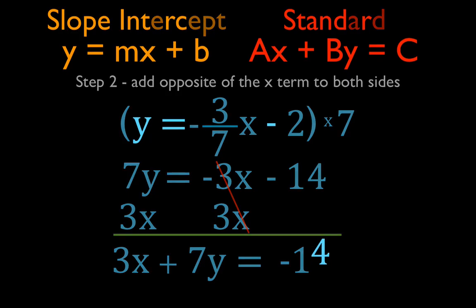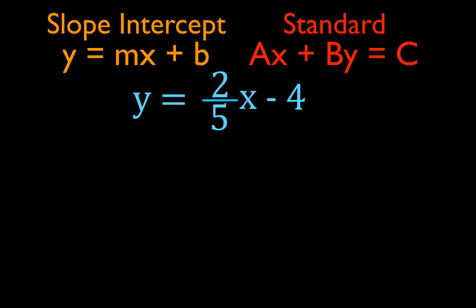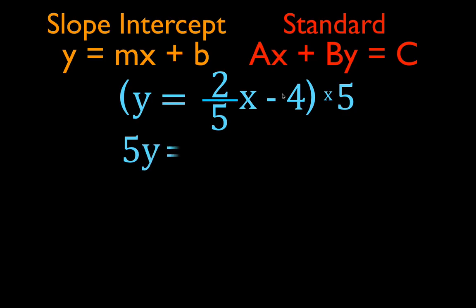For the next equation, we do the same two steps. Step 1: if the slope is a fraction, multiply by the denominator. Here, two-fifths is a fraction and the denominator is 5. Multiplying through: 5 times y is 5y; two-fifths x times 5, the fives cancel leaving 2x; minus 4 times 5 is minus 20. Step 1 complete — we multiplied by the denominator to eliminate the fraction.